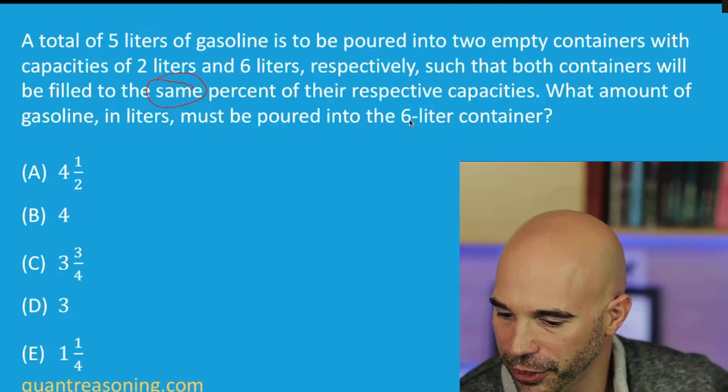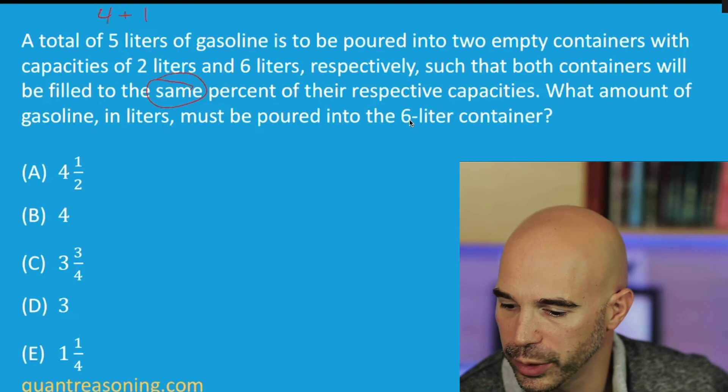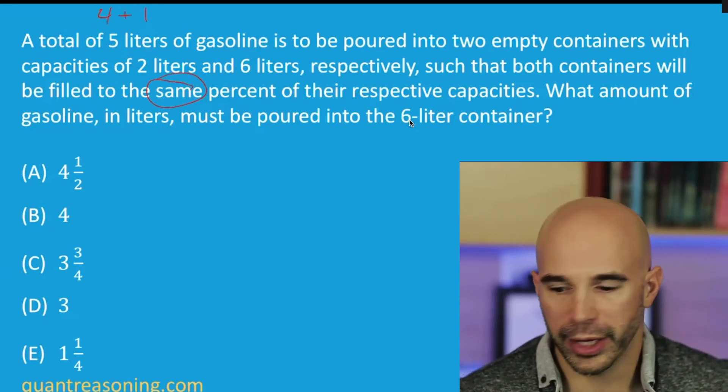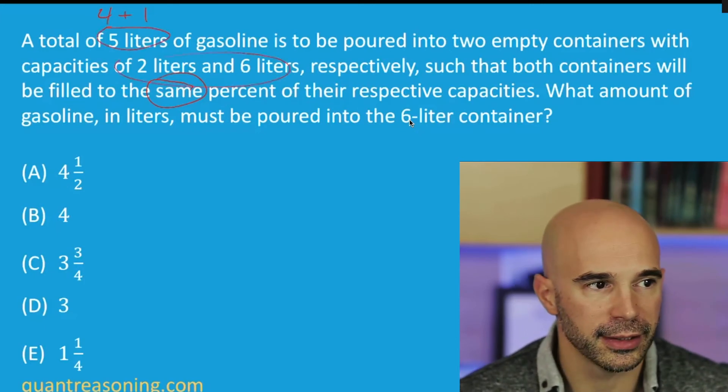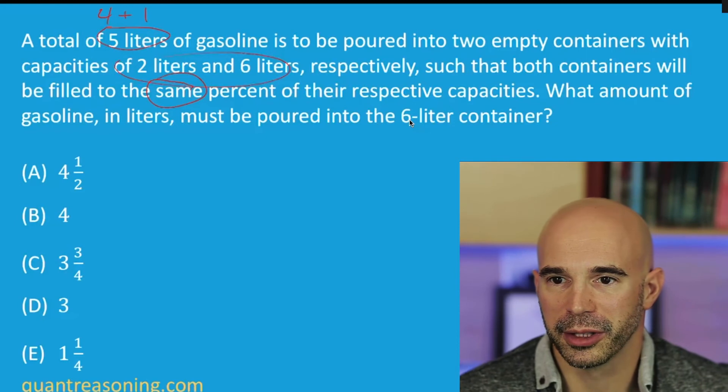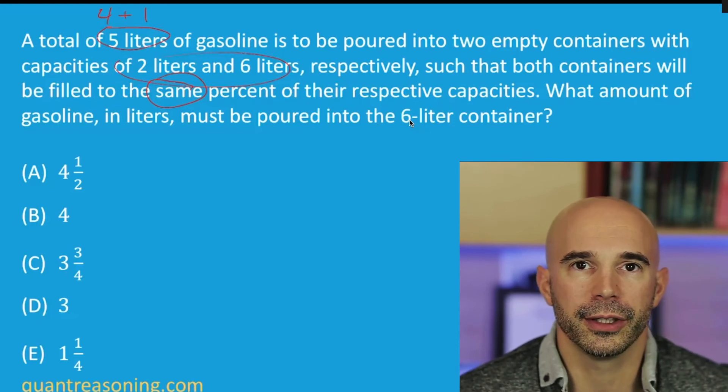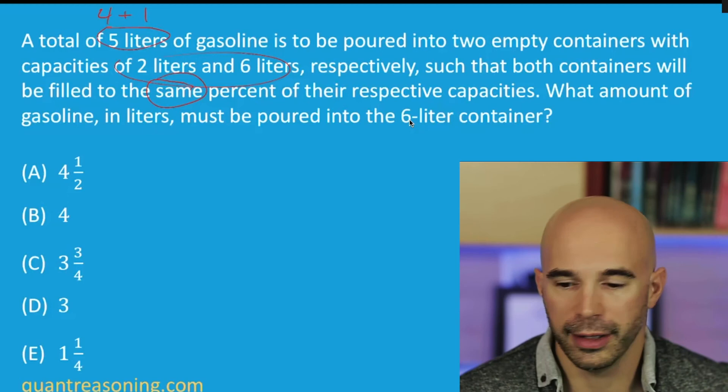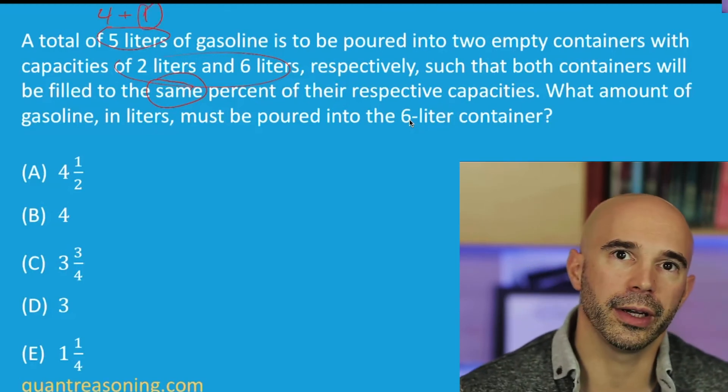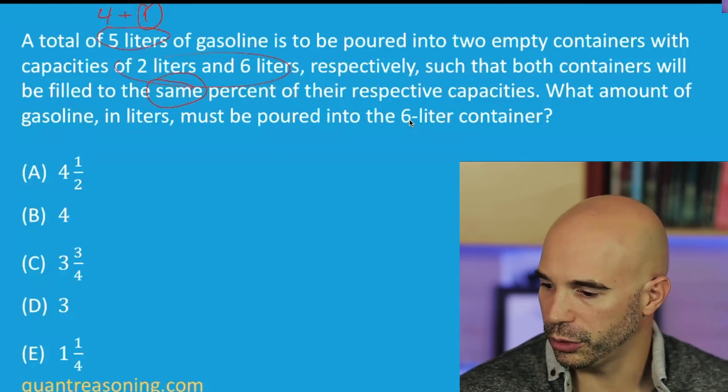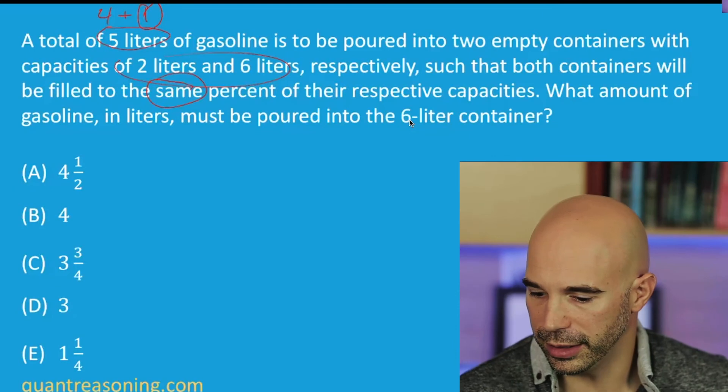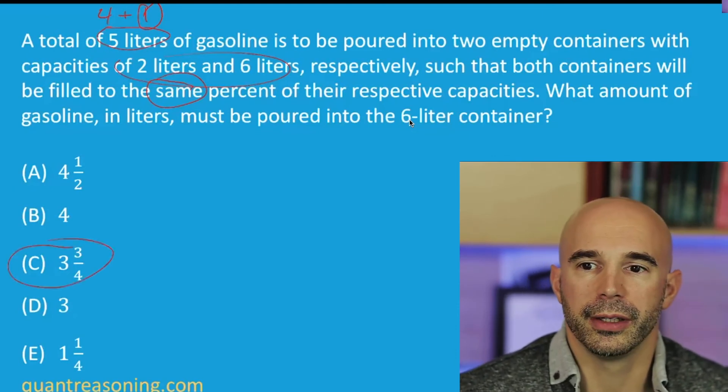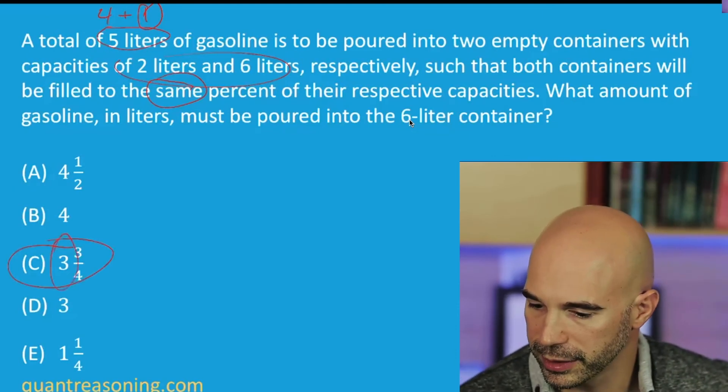What Chris did is he said I'm going to think of these five liters as four plus one liters. And what was his motivation to do that? Five isn't a very convenient number in the context of eight liters. Four is much more convenient. Four is exactly half of the total capacity. So he said I can use those four liters to fill each of the containers halfway. I have one liter left. From that one liter, I'm going to have to distribute that by the ratio of the sizes of the containers. So three-quarters of a liter will go to the big container, and that's how you get three and three-quarters total. The three comes from the four, and the three-quarters comes from the one.